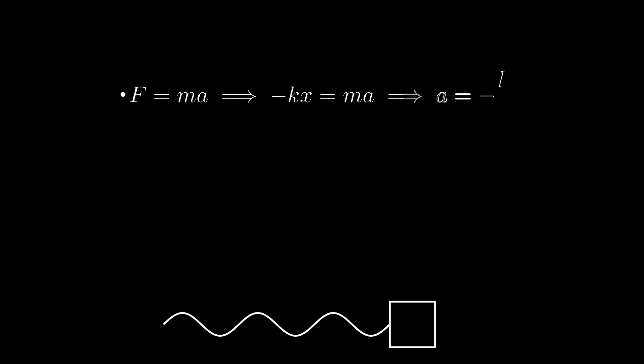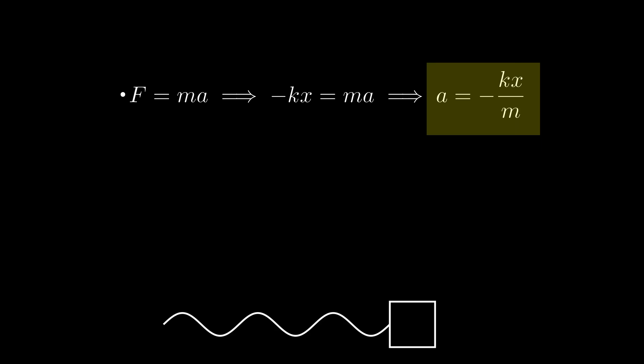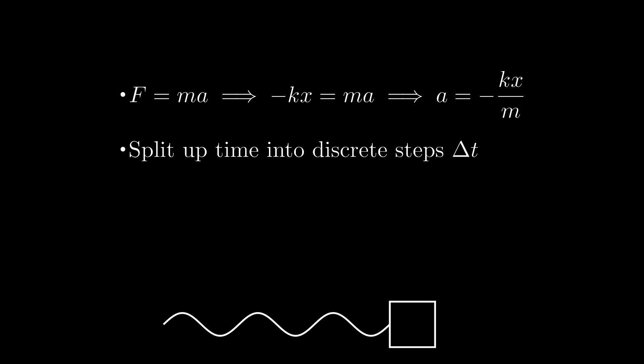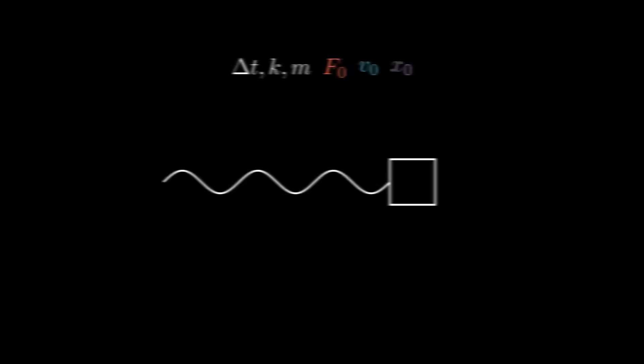Well, using Newton's second law along with Hooke's law, we find that the acceleration of the system is minus k over m times x. If we then split up our continuous time into discrete time steps Δt, we can iteratively calculate the velocity v and the displacement x. So let's have some initial conditions: force, velocity, and displacement, along with the parameters time step, mass, and spring constant.